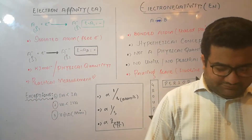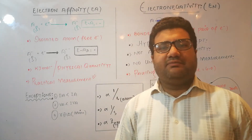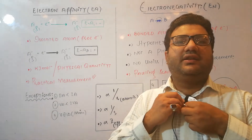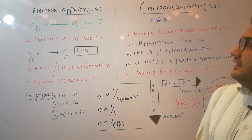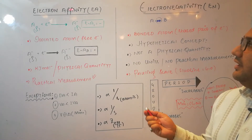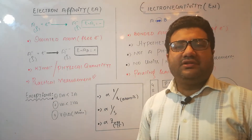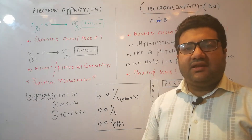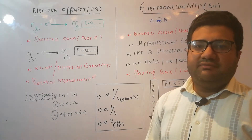Welcome everyone. Let's start the next topic which is a comparison between electron affinity and electronegativity. Basically, both electron affinity and electronegativity refer to the attraction for electrons — the ability of an atom to attract electrons.